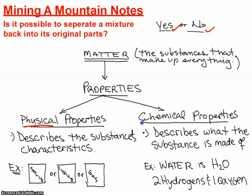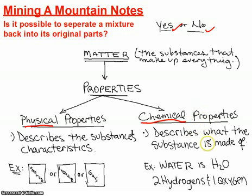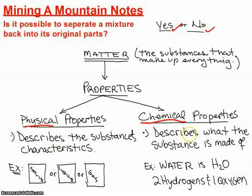The other way of describing matter is its chemical properties — the things in the atomic structure, what it's made out of. For example, if you take water, water is a thing, but it's made out of hydrogens and oxygens. So physical properties describe the substance, and chemical properties describe what the substance is made of.